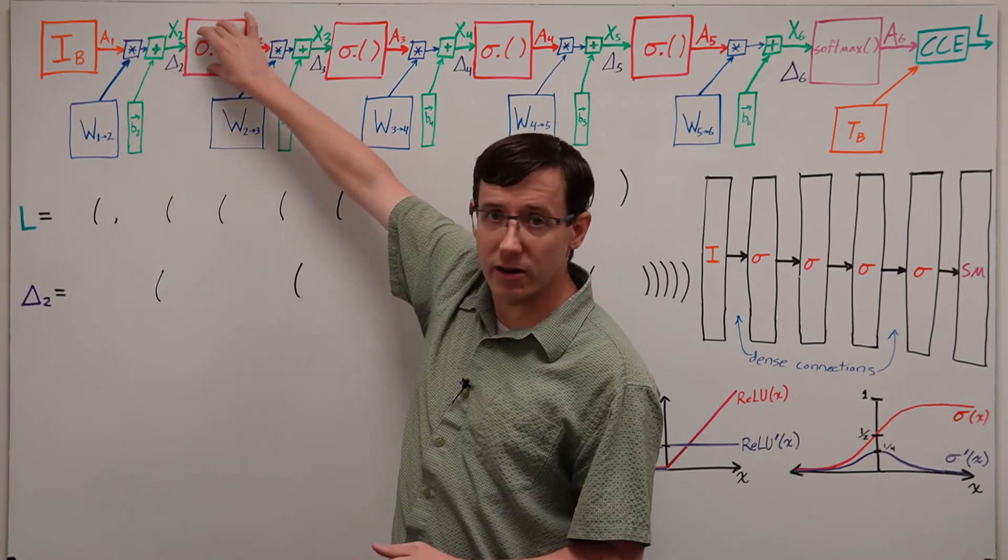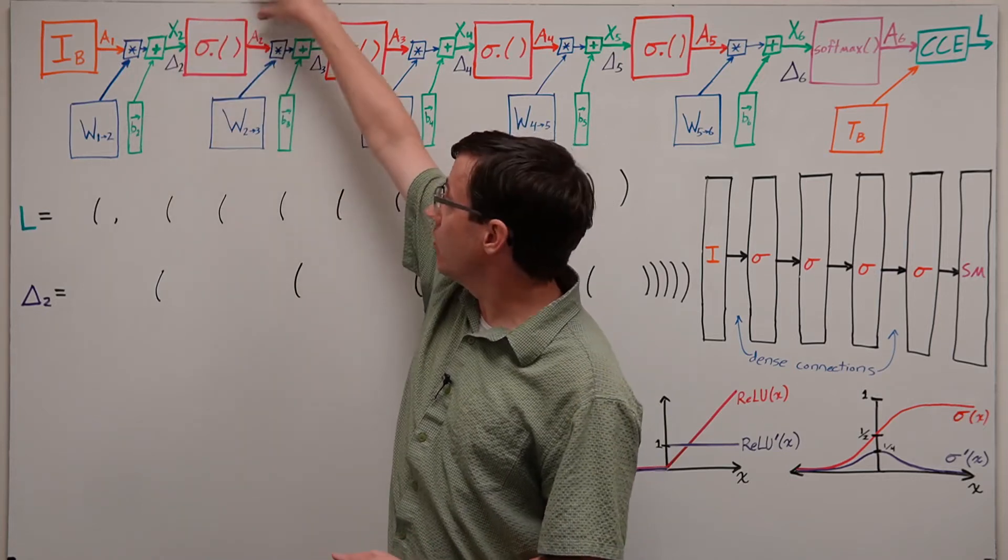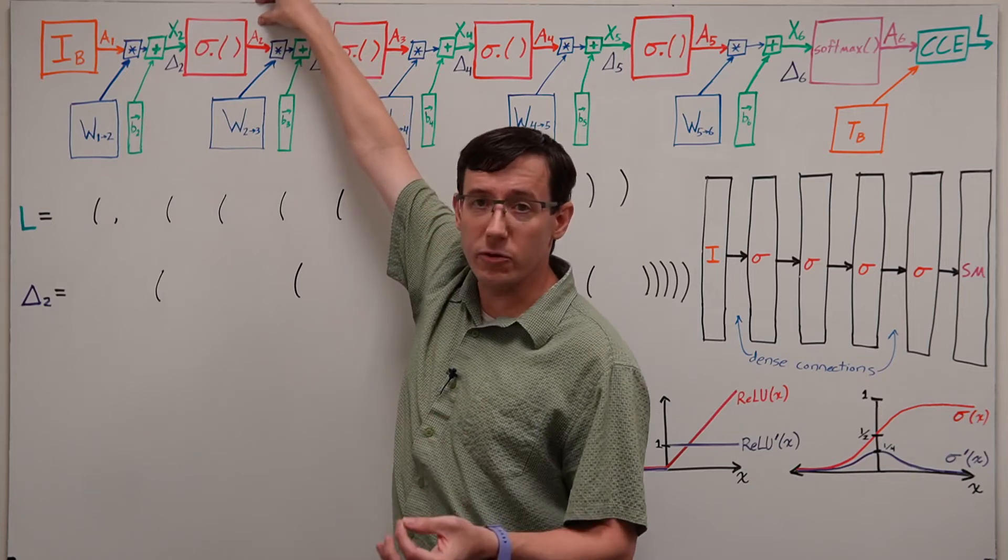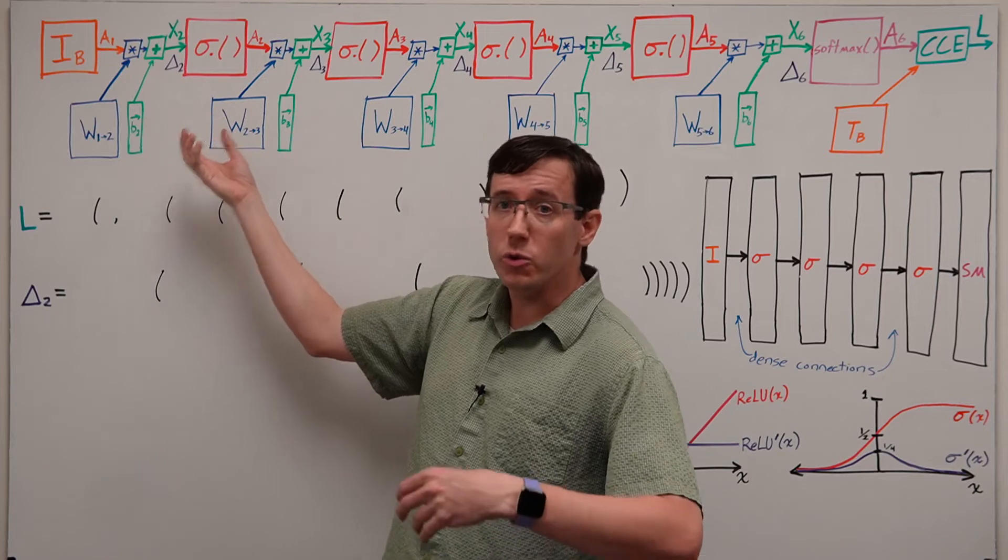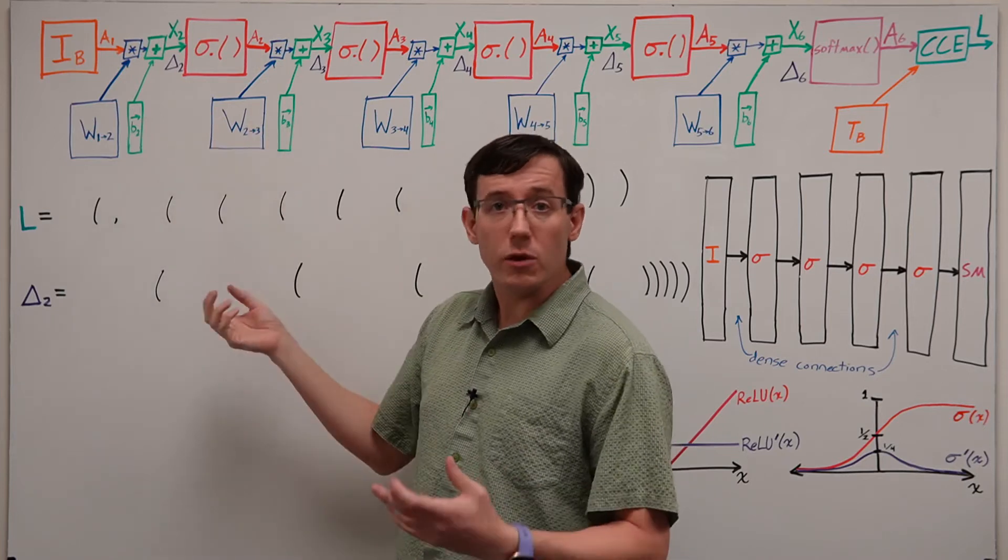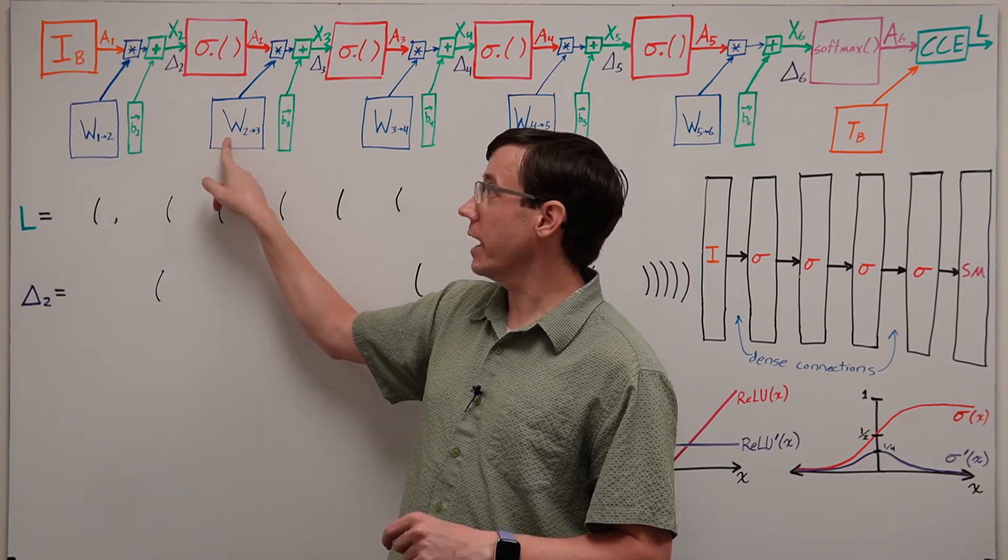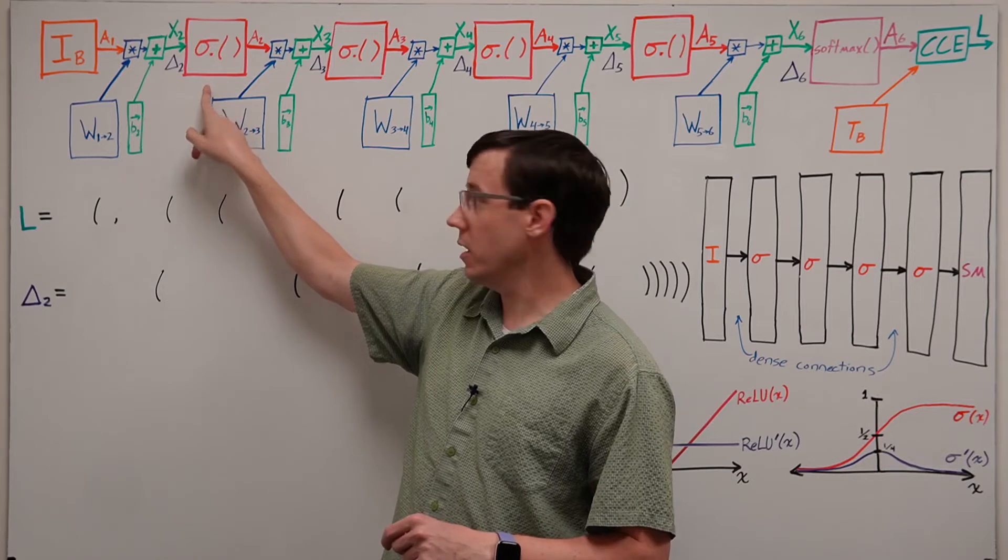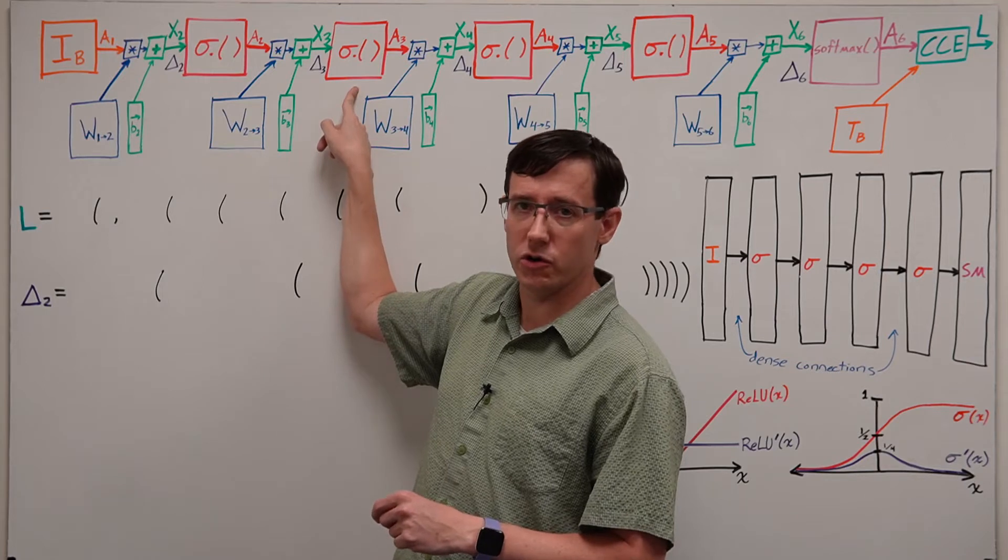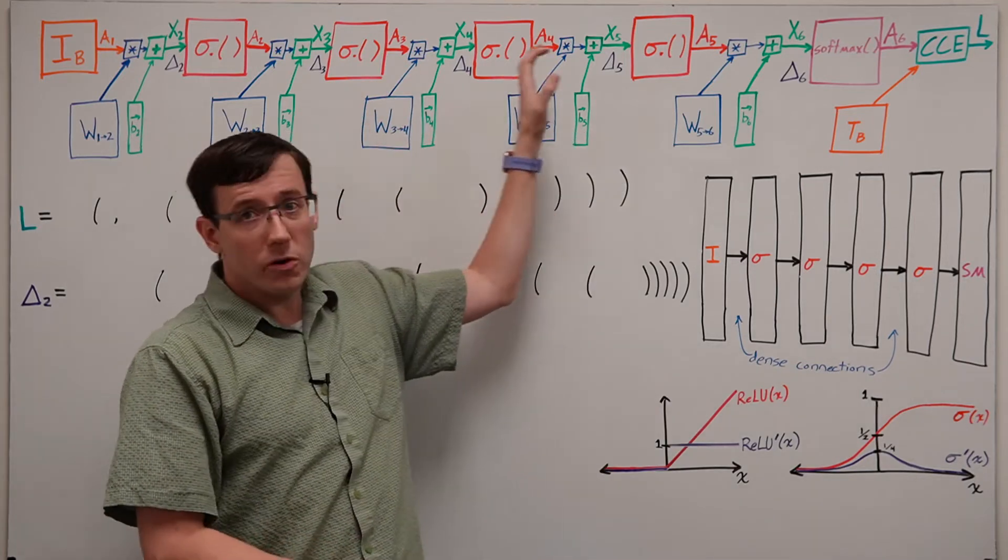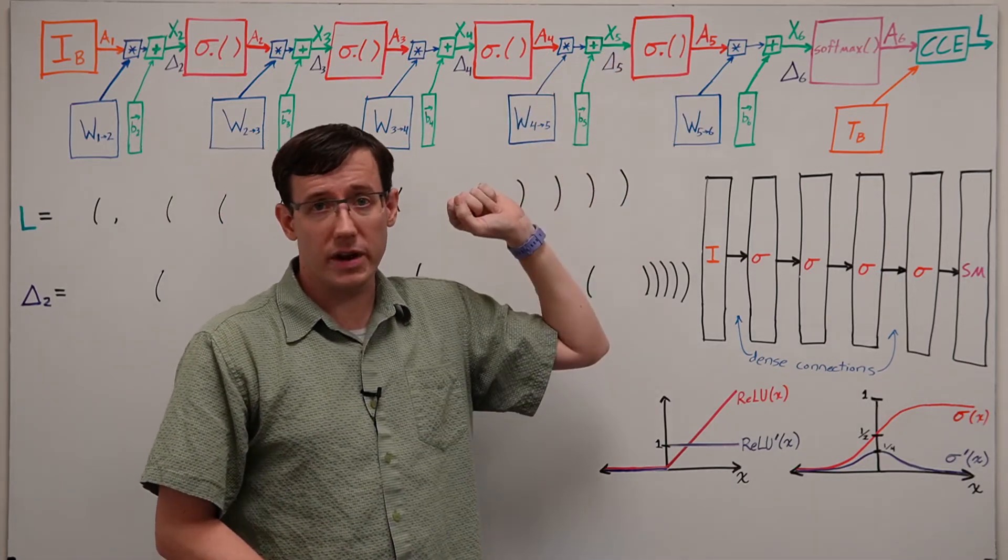Then we apply the layer 2 activation function, which produces our matrix of activations at layer 2. From layer 2 to 3 we have the same sequence of operations performing a matrix multiplication, then adding the vector of biases and applying the activation function. And this proceeds through each of the hidden layers in the network.